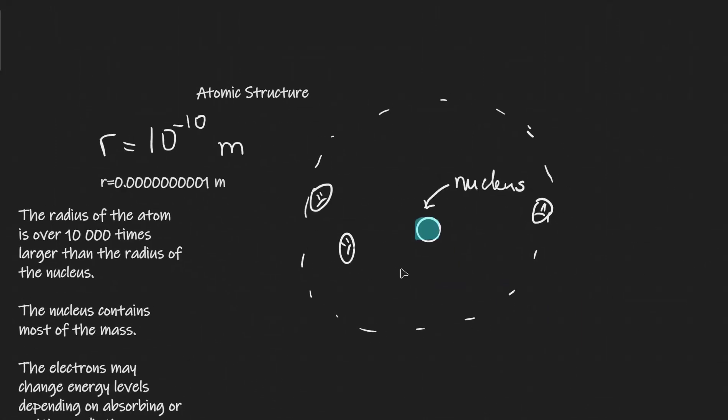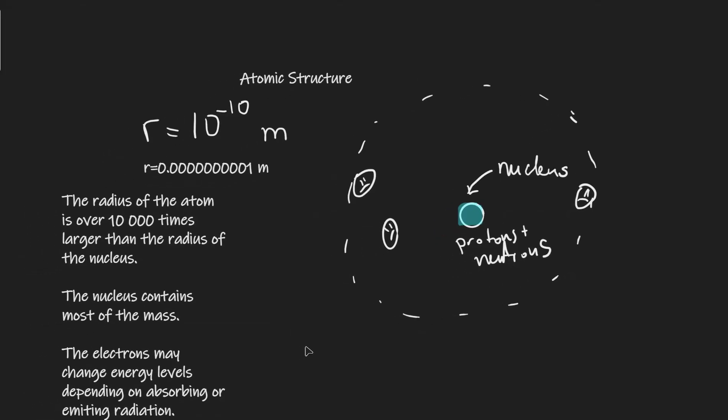You guys are probably familiar with the standard picture of an atomic nucleus. The nucleus will consist of protons and neutrons, and we also have some electrons just orbiting around it at various different distances.